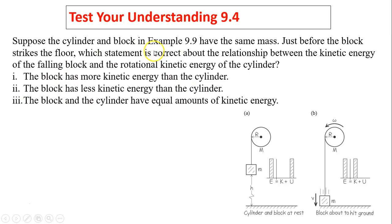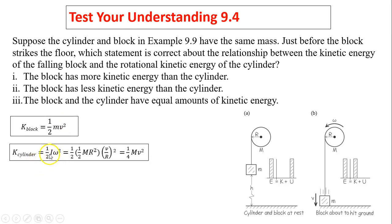Last, to check your understanding. Suppose the cylinder and block in the example have the same mass just before the block strikes the floor. Which statement is correct about the relationship between kinetic energy of the falling block and the rotational kinetic energy of the cylinder? Block is 1/2 MV squared, cylinder is 1/2 I omega squared. This is I, this is omega, so it turns out to be 1/4 MV squared. If little m equals big M, then the block has more kinetic energy than the cylinder. So the answer is I.